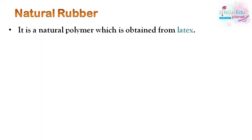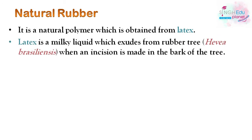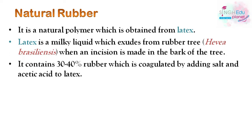Natural rubber is a natural polymer which is obtained from latex. Latex is a milky liquid which exudes from the rubber tree when an incision is made in the bark of the tree. The scientific name of the rubber tree is Hevea brasiliensis, and it contains 30 to 40 percent rubber.